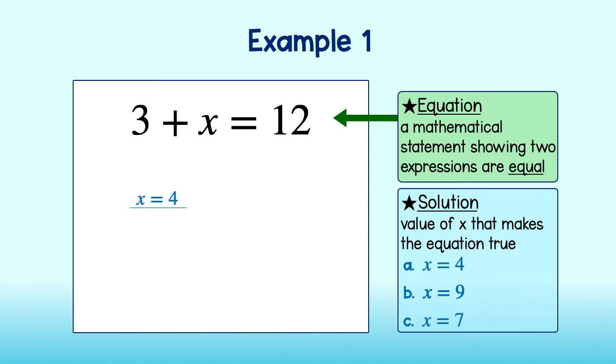First, let's try x equals 4. We can rewrite this equation as 3 plus 4 equals 12. Since 3 plus 4 equals 7, we end up with the statement 7 equal to 12, which is not a true statement. 4 cannot be the solution.